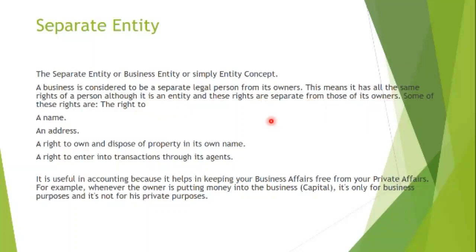So if you have a person owning a business, the business is a separate person from the owner. You cannot mix up their accounts or transactions between the two — they must be accounted for separately. Some of the rights we are talking about include the right to a name. When you establish a business legally, you should give it a name, and that name is unique. Somebody else cannot go and name their business with your business name.